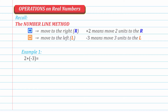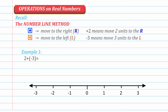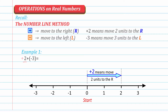What if we're asked to add 2 plus negative 3? We try to draw this real number line, then look at the two addends. The first addend is 2 and the second addend is negative 3. The first addend is positive 2 — there's no positive sign written but it's definitely positive. So, starting from zero, the origin, positive 2 means move 2 units to the right. Therefore, you have this arrow.